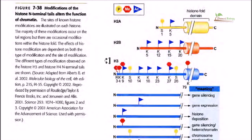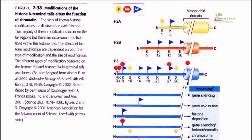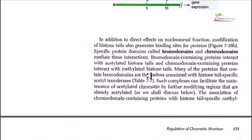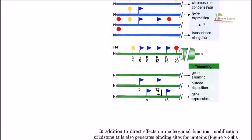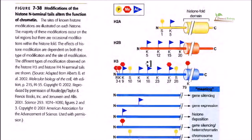H3 is the most versatile histone subunit, as all three types of modification can be seen in H3, but not as readily in H2A, H2B, and H4. Acetylation is the most common modification seen on H2A, H2B, and H4. Where acetylation markers are present on H4, for instance, they tag those histones to signal gene expression.